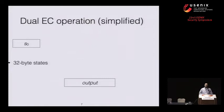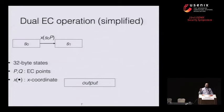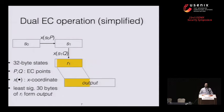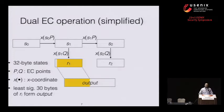To generate output, you take S0 and multiply it by this fixed point P — fixed in the Dual EC standard — then take the x-coordinate to get a 32-byte new state S1. To get output, you take S1, multiply it by another fixed point Q, take the x-coordinate, and that gives you R1. You don't use all of R1; instead you take the least significant 30 bytes as the initial part of your output. Then this process continues: take S1 times P to get S2, multiply S2 by Q to get R2, take the least significant bytes of R2 for the next piece of output, and so on.